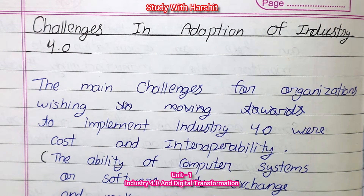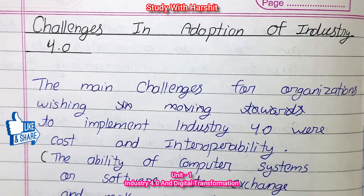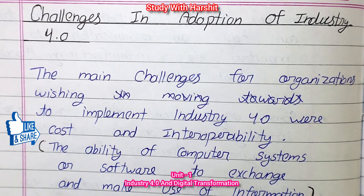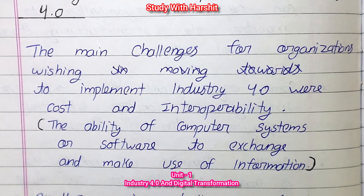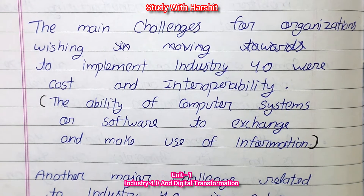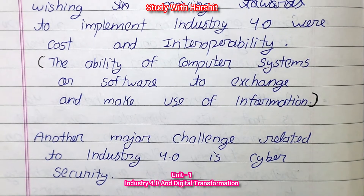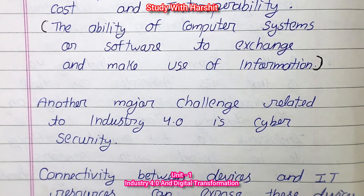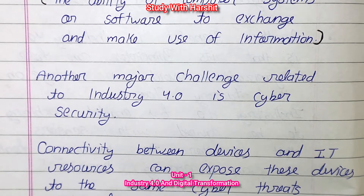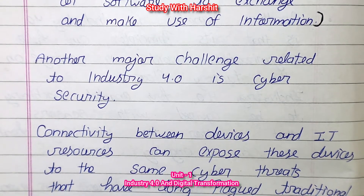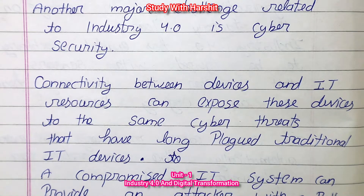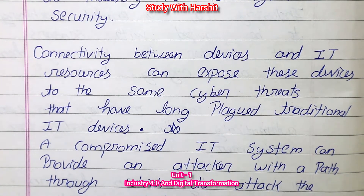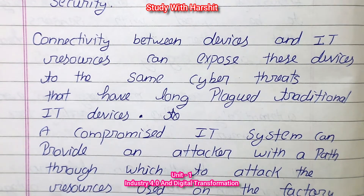Challenges in Adoption of Industry 4.0: The main challenges for organizations wishing to implement Industry 4.0 are cost and interoperability — the ability of computer systems or software to exchange and make use of information. Another major challenge is cybersecurity. Connectivity between devices and IT resources can expose them to cyber threats, and a compromised IT system can provide an attacker a path through which to attack resources used on the factory floor.